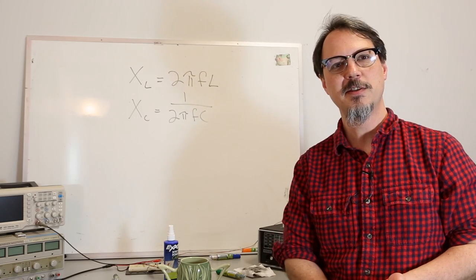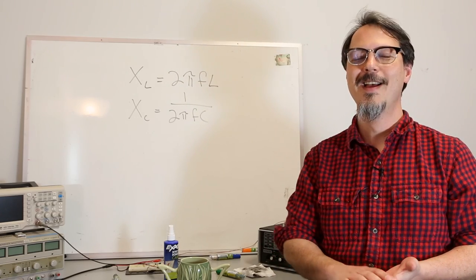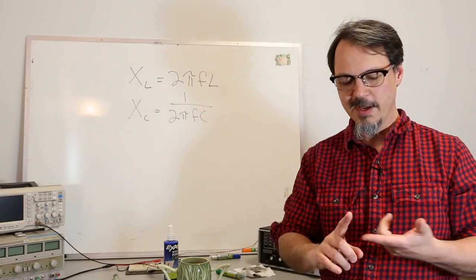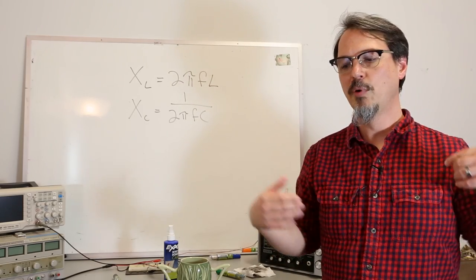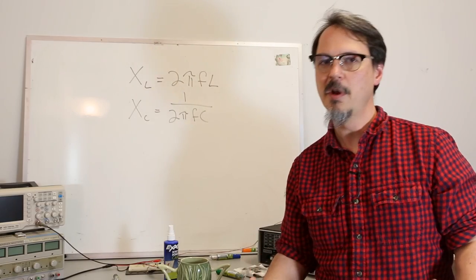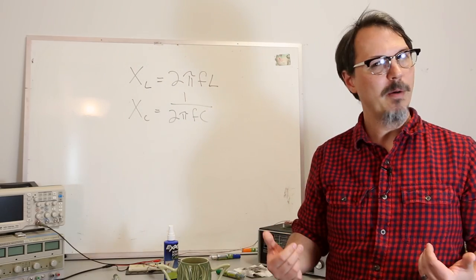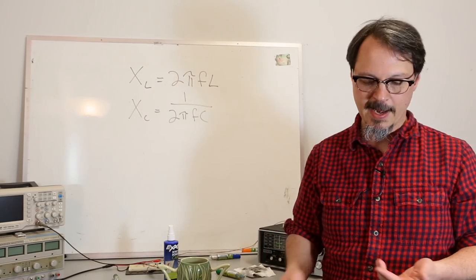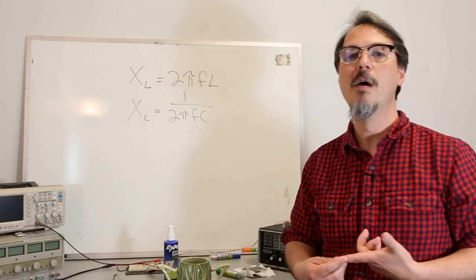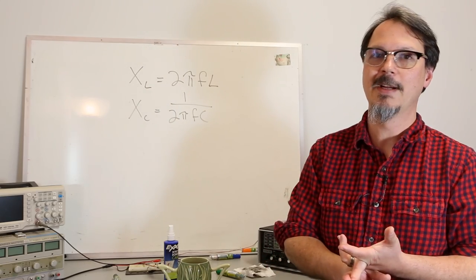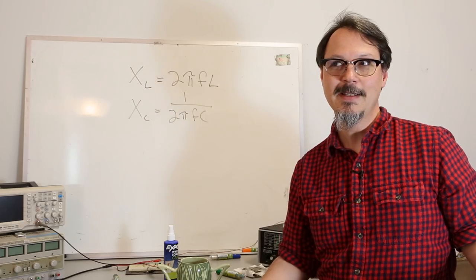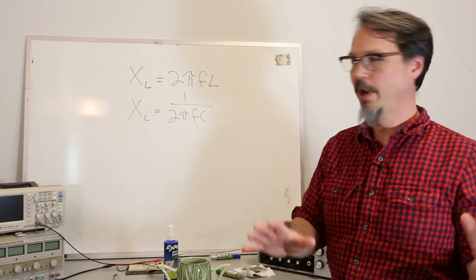Impedance is a resistance specifically to AC current flow, and it presents an opposition, but you get your power back out of those components. Impedance is made up of reactances, inductive reactance and capacitive reactance. Why is it called a reactance? Because you get your power back out of it.